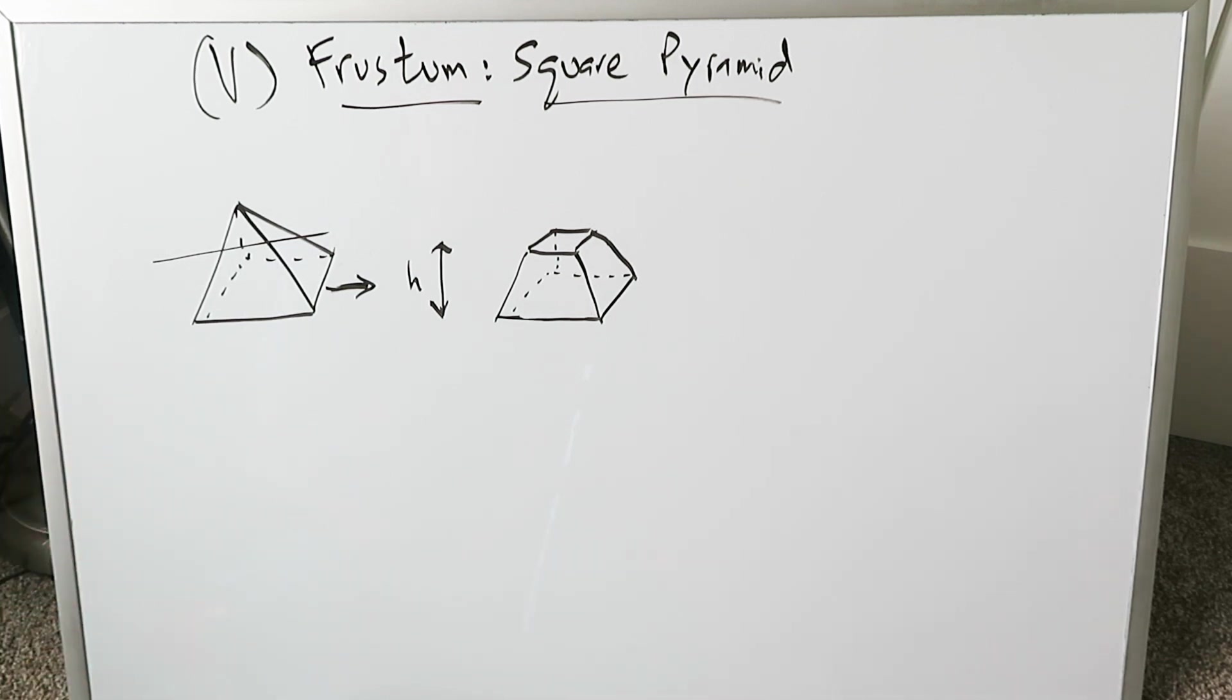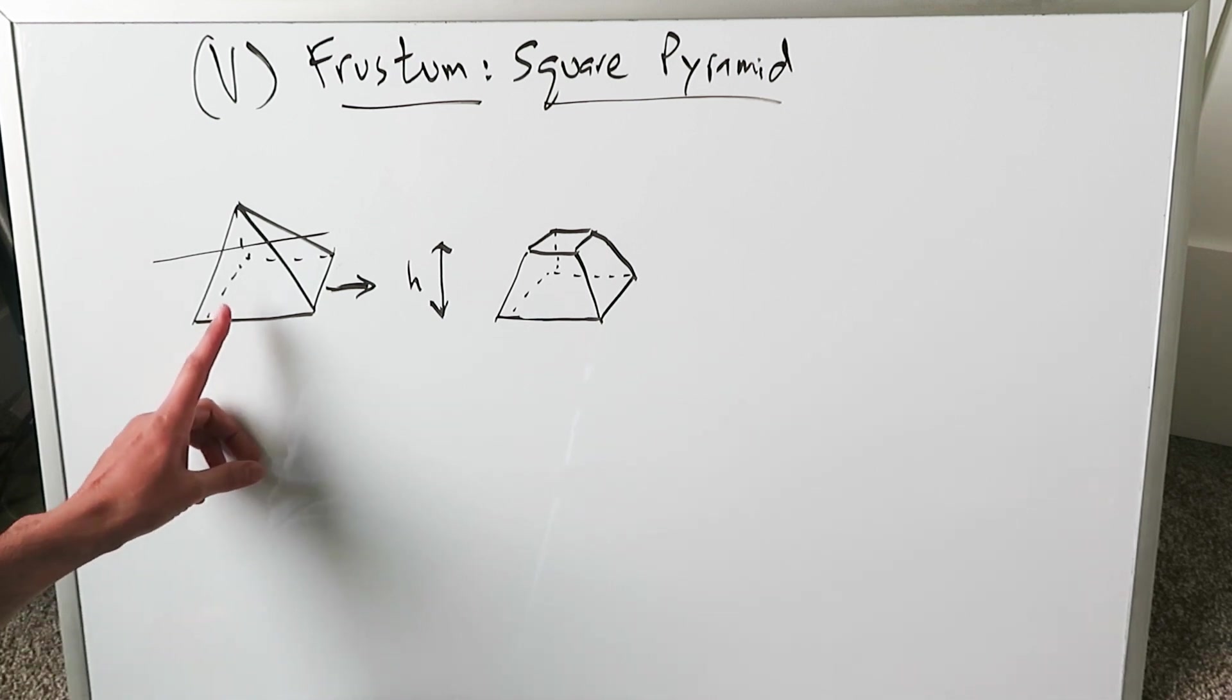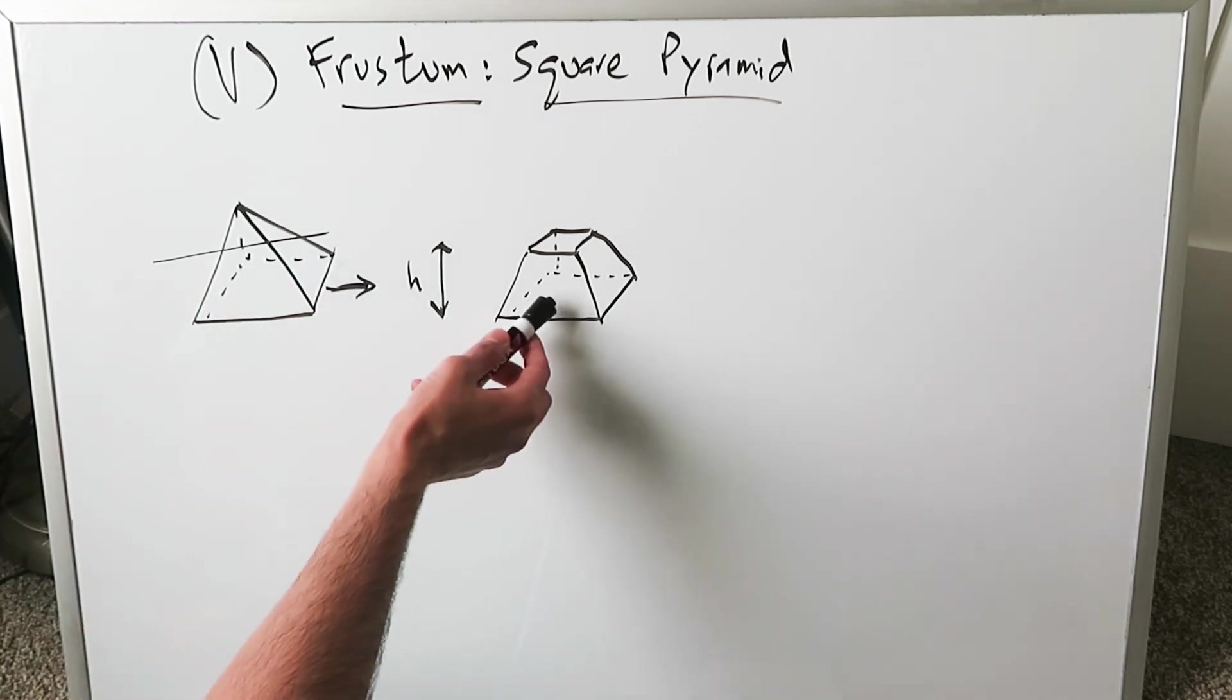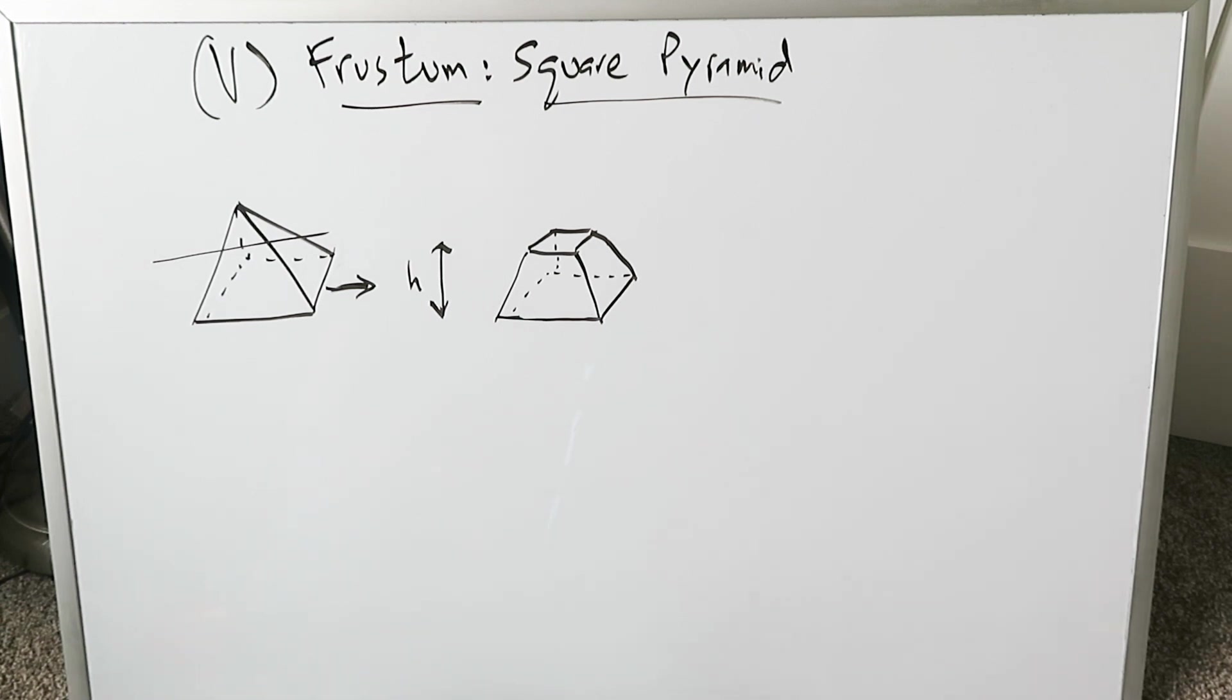I welcome all of you to this video on the volume of a frustum of a square pyramid. Take a square pyramid, slice it parallel to the base, and you develop a frustum of that solid. Let's see how we would derive the formula for the volume of this frustum.